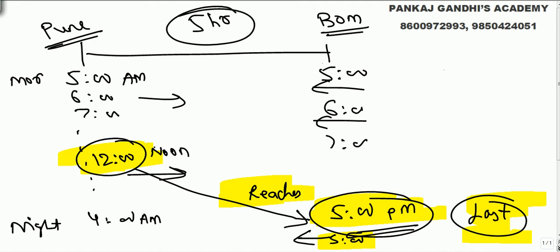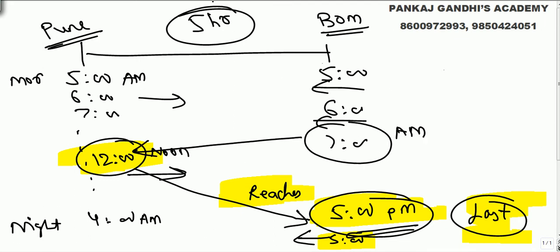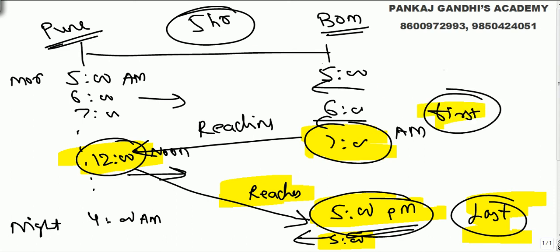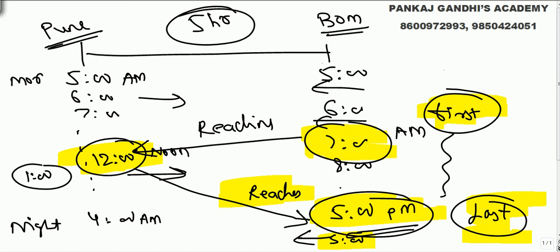Now which is the first train we meet? The train that reaches here at 12 o'clock is something which started in the morning at 7 AM — it starts at 7 AM and reaches here at 12 o'clock. We are just starting and that train is just reaching. So the first train we meet is the one which starts from there at 7, and the last train we meet is the one which starts from there at 5.